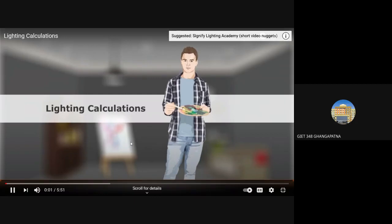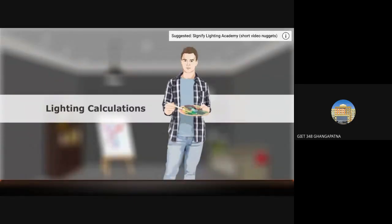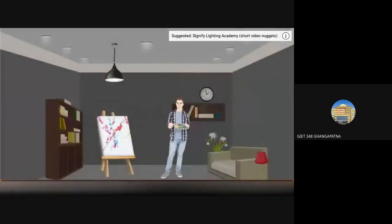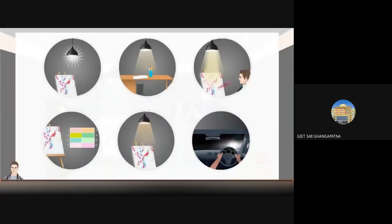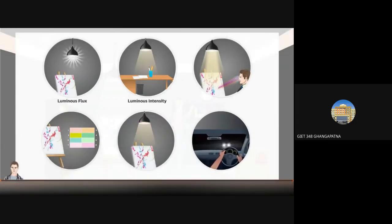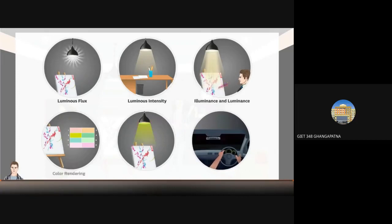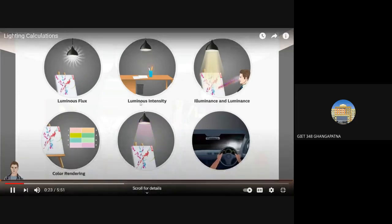In this video, we will learn about the basic lighting calculations required to carry out a lighting design. A lighting design helps us identify the most appropriate lighting levels for different environments. A number of factors should be kept in mind: luminous flux, luminous intensity, illuminance and luminance, color rendering, color temperature, and glare.